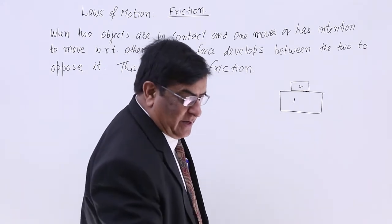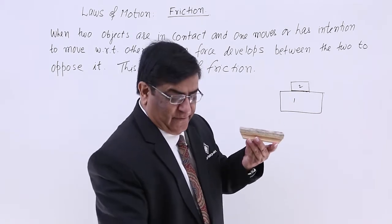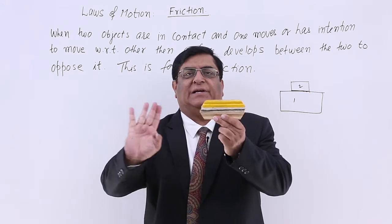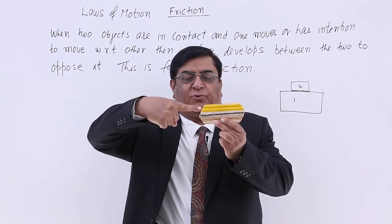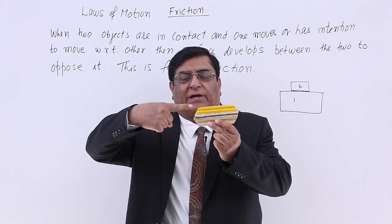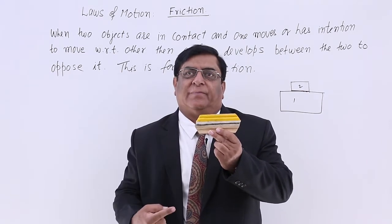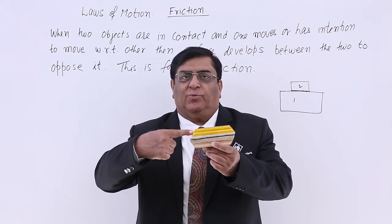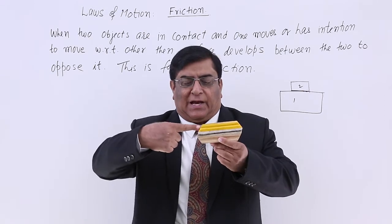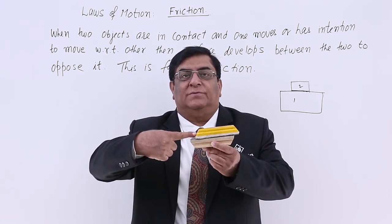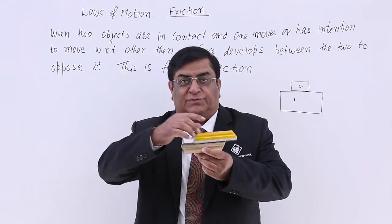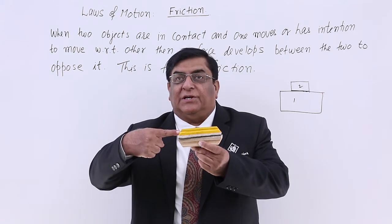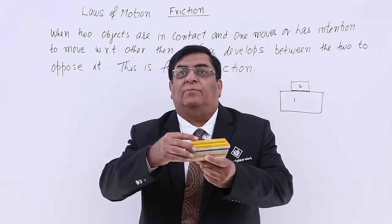Here at the contact point, there is a force which develops that tries to oppose the motion or intention of motion. For example, I have one body and another body on it. There is no intention of motion at present. Now I apply one newton — it does not move. Two newtons — it does not move. Three newtons — it moves. Four newtons — it moves faster.